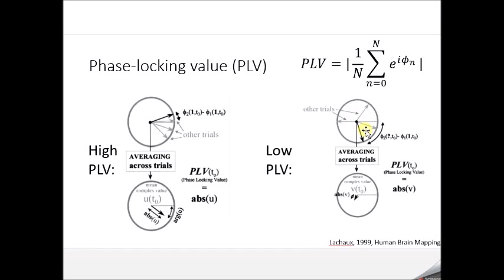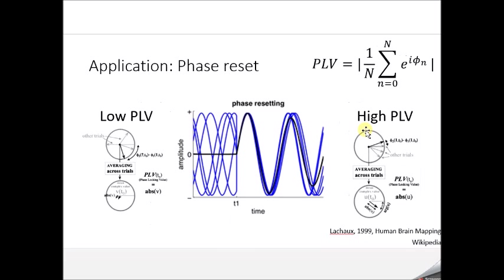Before the event, the phase is random from trial to trial — we're in the situation where phases cancel and the PLV is low. Immediately after the event, the phase from trial to trial becomes highly correlated, and when we sum the vectors and take the magnitude of the mean, we get a higher PLV.